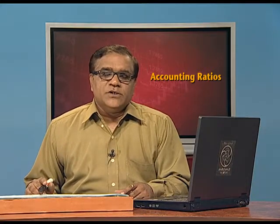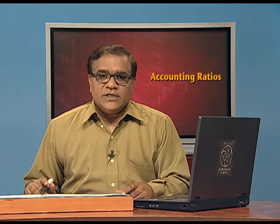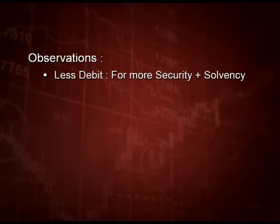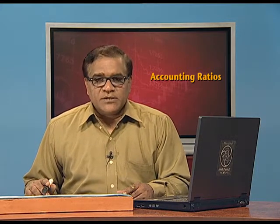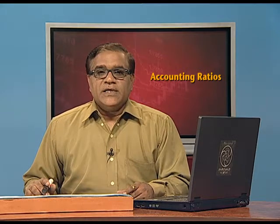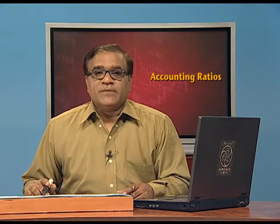What do we observe from this ratio? If there is less debt, it means more security and solvency. But if high debt is there, we can trade on equity — that is, we can take advantage of low cost debt to make more profit. Interest paid is always shown in the P&L account, which gives the company some kind of tax advantage and we can earn more on that money.